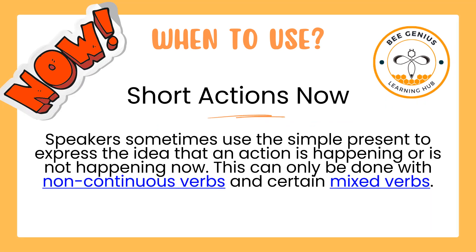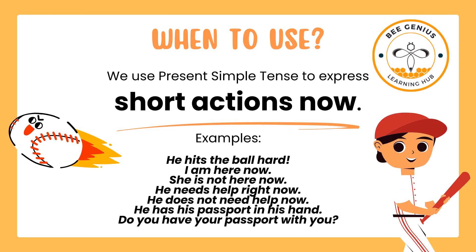We also use simple present for short actions now. Speakers sometimes use the simple present to express the idea that an action is happening or is not happening now. This can only be done with non-continuous verbs and certain mixed verbs. Examples: He hits the ball hard. I am here now. He is not here now. He needs help right now. He does not need help now. He has his passport in his hand. Do you have your passport with you?